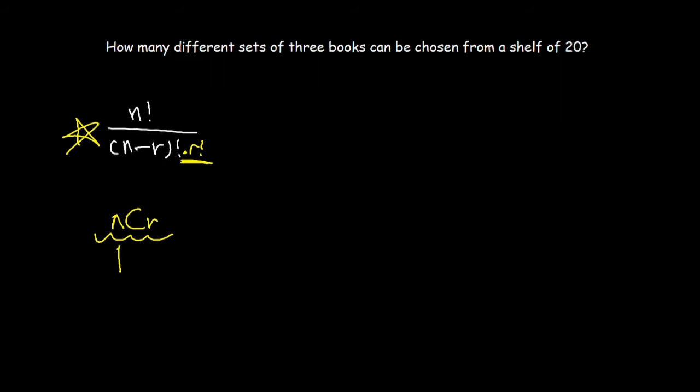This n is the total number of items in the set, and r is how many you're going to choose. In this case, n is 20 because there are 20 books on the shelf, and r is 3 because you're choosing 3 out of 20.